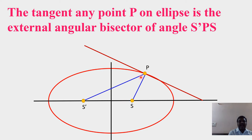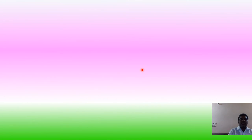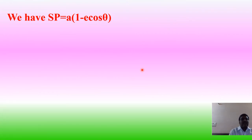Similarly, we can prove the normal at P is the internal angular bisector. Let T be the point of intersection of the tangent at P with the major axis of the ellipse. To prove the tangent is the external angular bisector, we need to show that S'P/SP = S'T/ST.